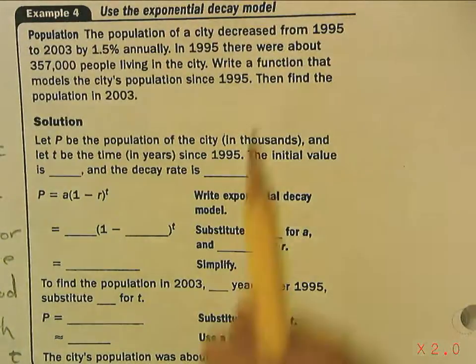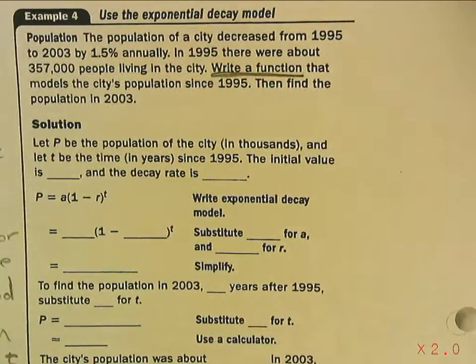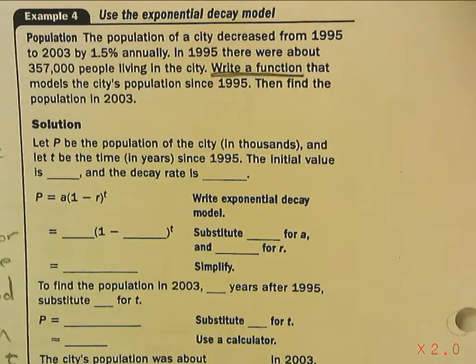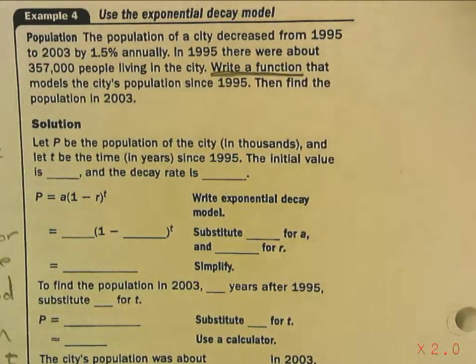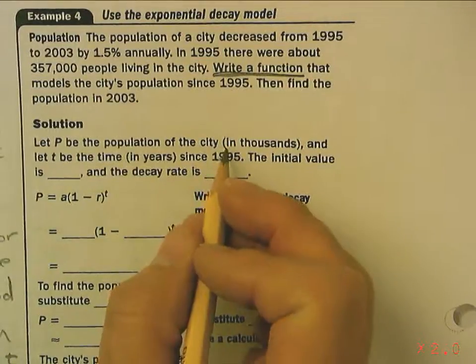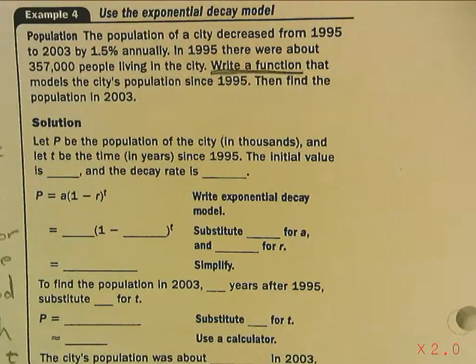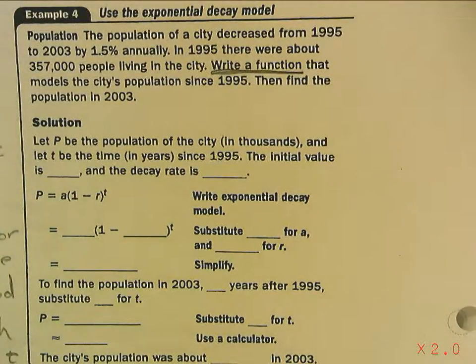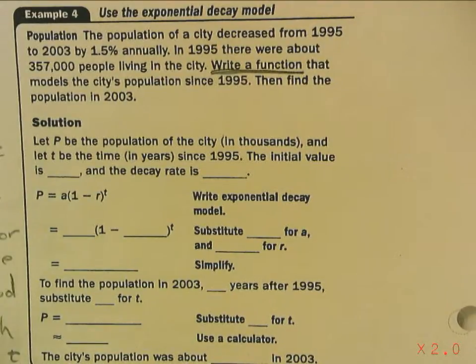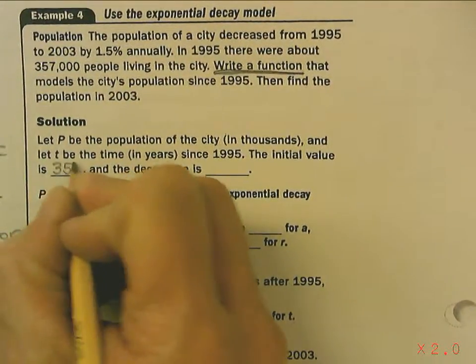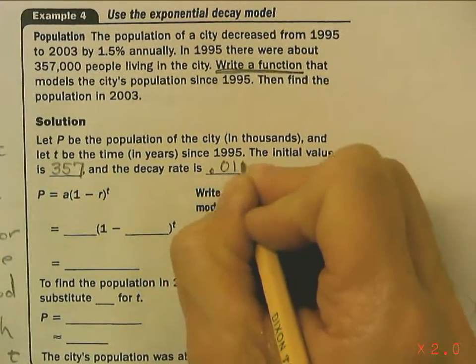Whenever it tells you to write a function, that means you are to have two unknowns. In this case, y and t. So, we're going to let p be the population of the city in thousands, and we're going to let t be the time in years since 1995. The initial value is 357, and the decay rate is .015.